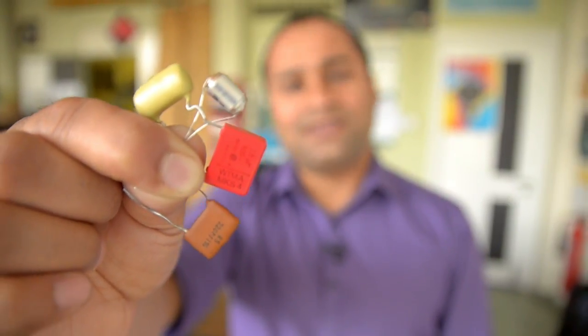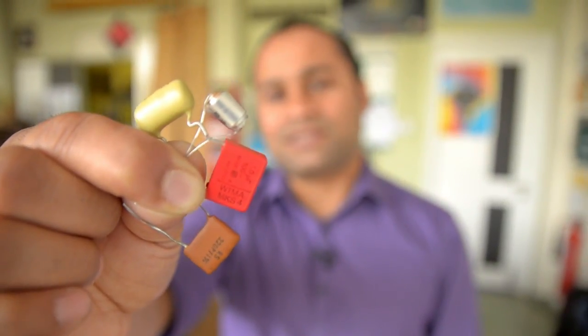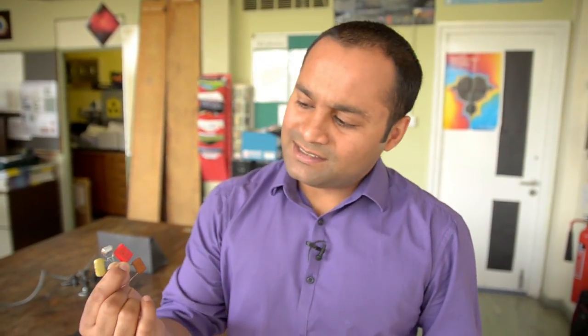These are capacitors, and they're used in electrical circuits to store charge. They're crucial components in things like defibrillators, computers, and mobile phones. As you can see, they come in a variety of shapes and sizes.